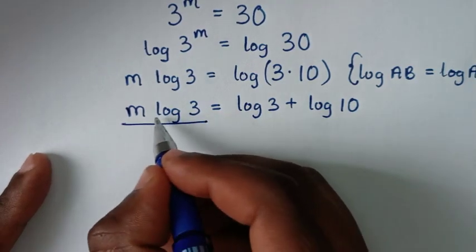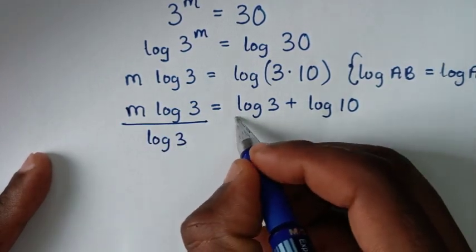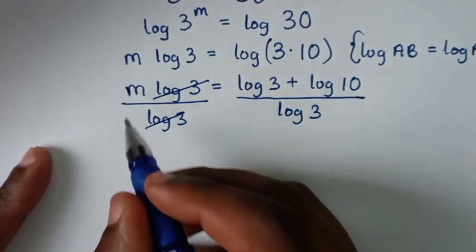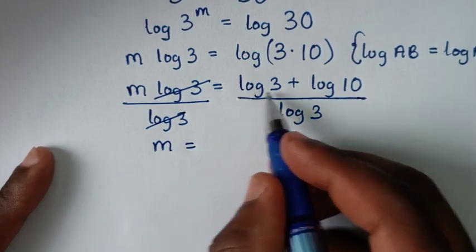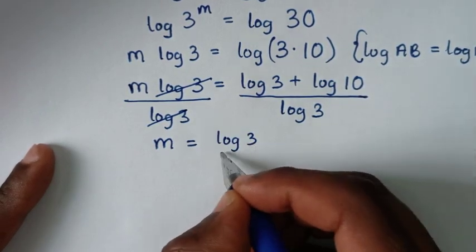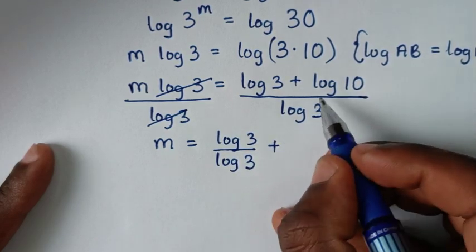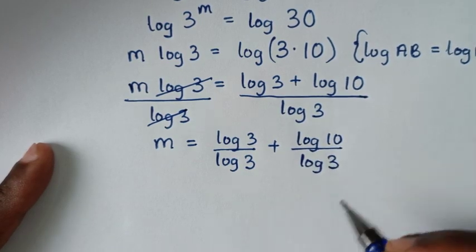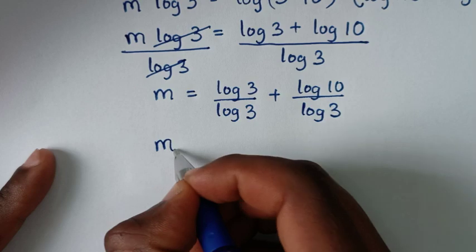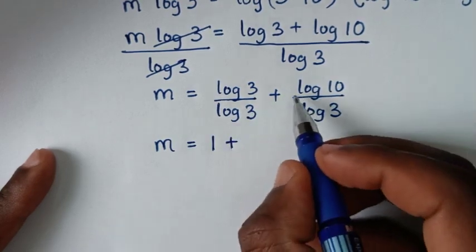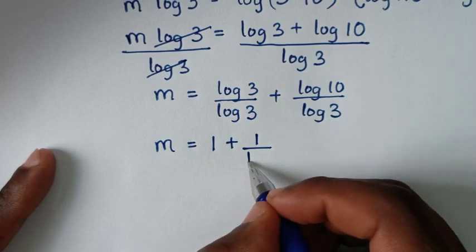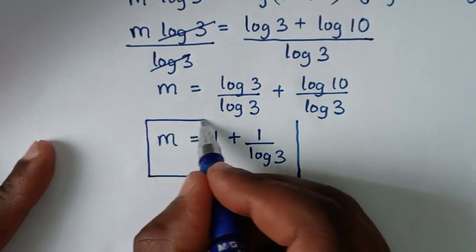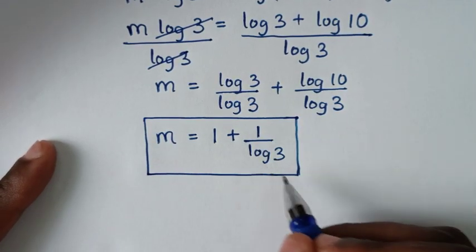Now we divide both sides by log of 3. The log 3 terms cancel on the left, giving m equals (log 3 plus log 10) over log 3. This simplifies to m equals 1 plus log of 10 over log of 3. Since log 10 equals 1, the final answer is m equals 1 plus 1 over log of 3.